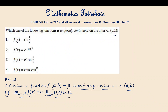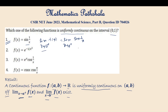In the first option, f(x) = sin(1/x). We have to check the limit as x tends to a⁺, i.e., the limit as x tends to 0⁺ of f(x), which is the limit as x tends to 0⁺ of sin(1/x). To check this limit, we need to take two paths.